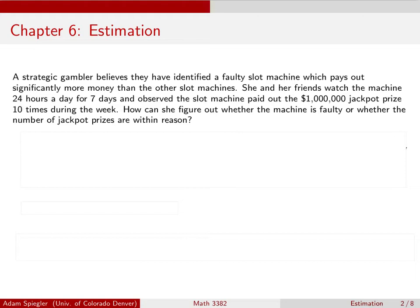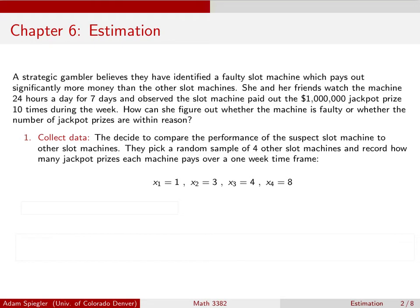So step one in this process would be to go ahead and collect some data. Okay, so they stake out four other slot machines in the casino. Each person watches a slot machine. And over the course of the week, slot machine one only paid out one jackpot. Slot machine two paid out three jackpots. Slot machine three had four jackpots. And slot machine four had a total of eight jackpots. So does this slot machine that we observed that paid out 10 jackpots, does that seem about right?